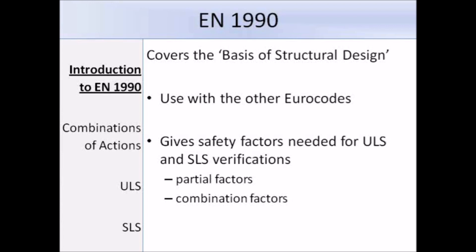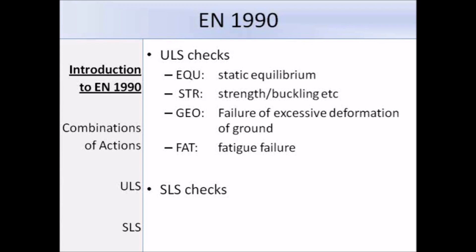To get the safety factors — that is, the partial factors and combination factors for ultimate and serviceability limit state verifications — we need to refer to EAN 1990. Ultimate limit states are to do with the failure of the structure, and ULS checks are needed to verify that the building is safe. In EAN 1990, there are four ULS checks.